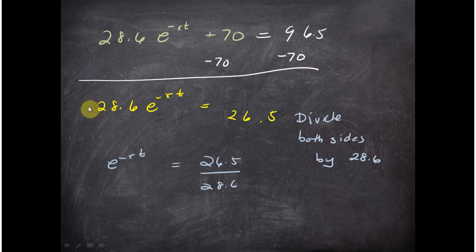That leaves me with this equation: 28.6 e to the minus rt is equal to 26.5. Next, I'm going to divide both sides by this 28.6. I'm doing that so I can isolate this expression and eventually be able to get at that r.